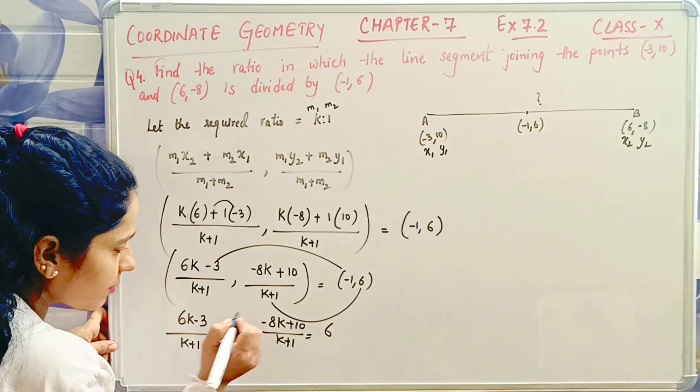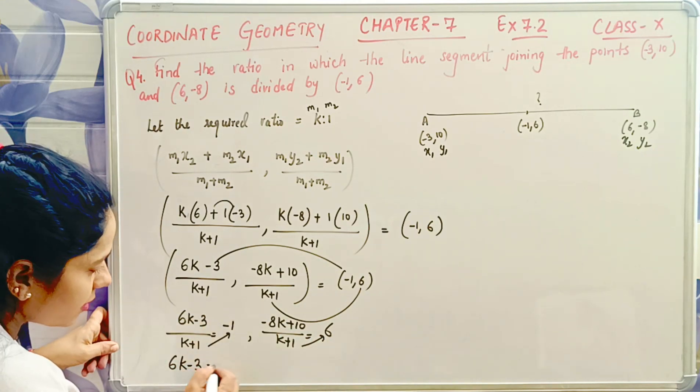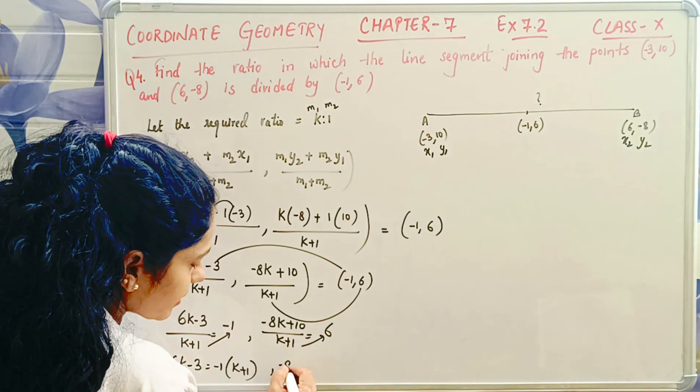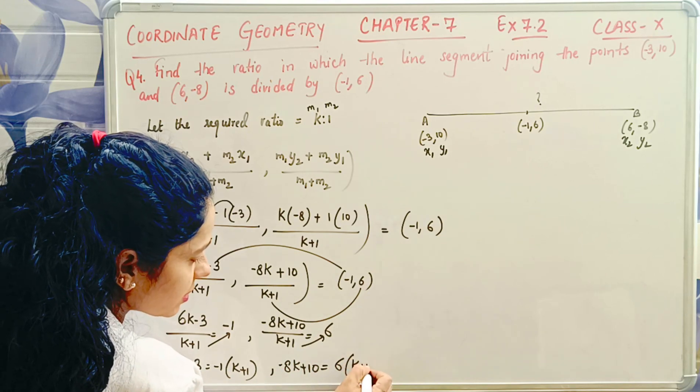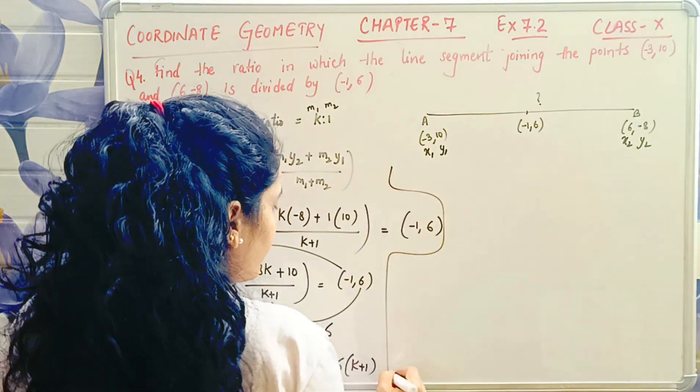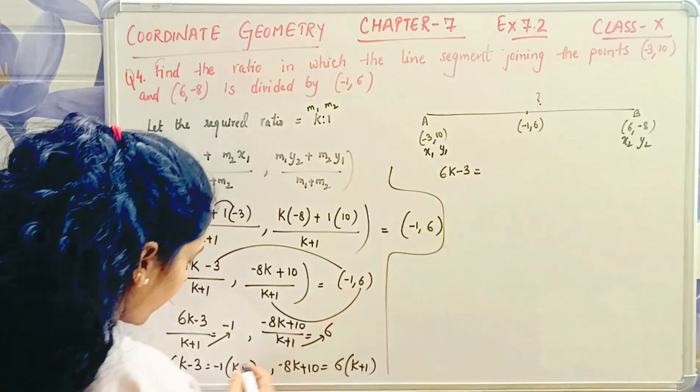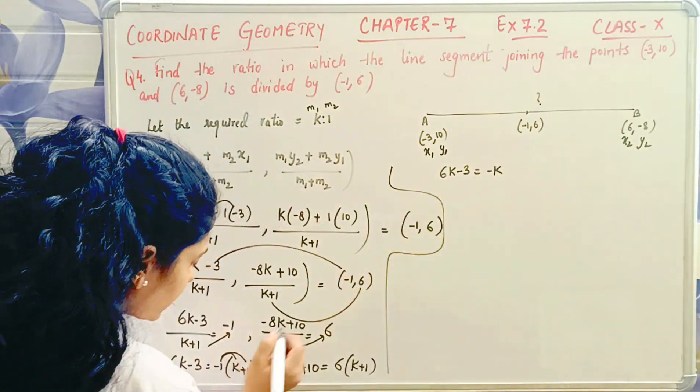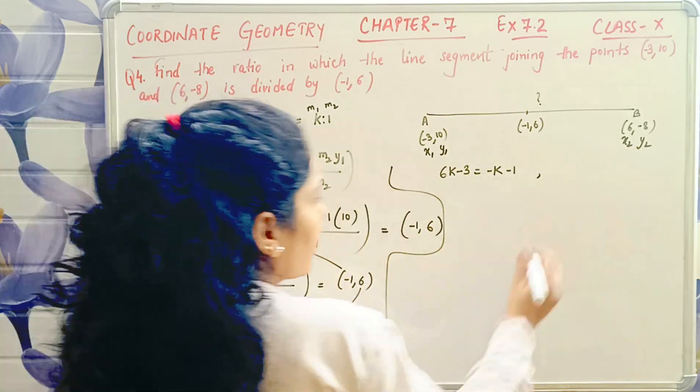Now multiply this here. Cross multiply. 6k - 3 equals -1 times (k + 1). Similarly, -8k + 10 equals 6 times (k + 1). Okay children, now see.